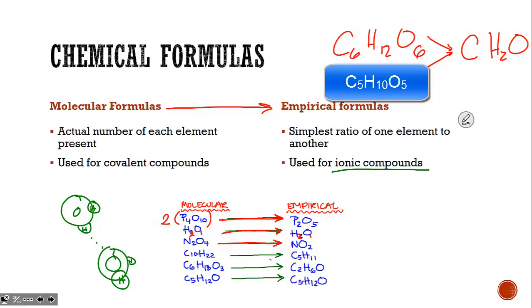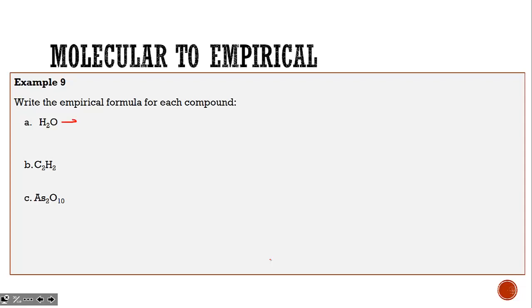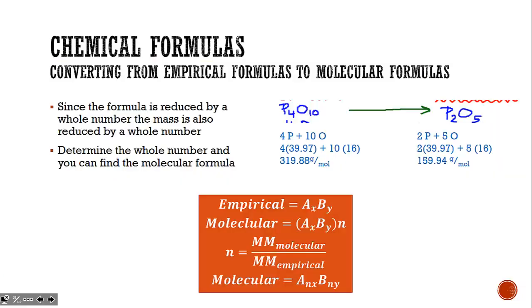Going from molecular to empirical formula is simply a matter of simplifying. For water, two to one is as simple as we're going to get. Ethyne (C₂H₂), we could pull a two out, giving us CH. Diarsenic pentoxide pulls a two out, giving us one arsenic for every five oxygens. An empirical formula asks you to simplify, to pull out that number the subscripts all have in common.